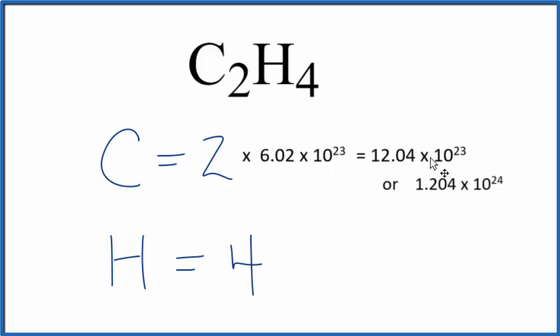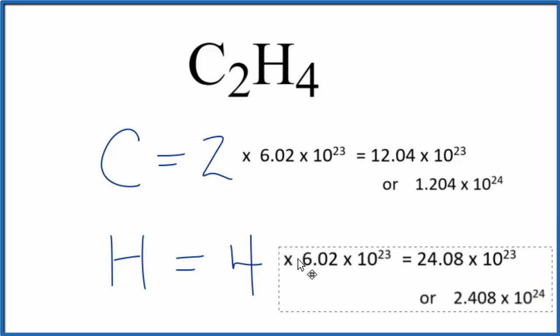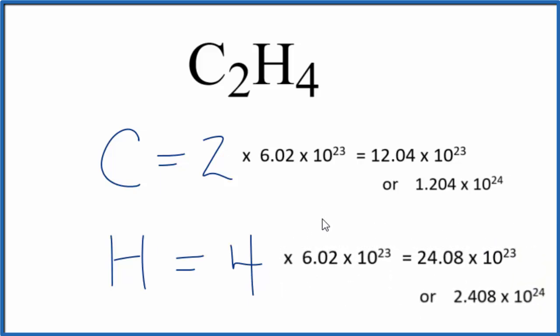So we have 12.04 times 10 to the 23rd carbon atoms in 1 mole of C2H4. Likewise, if you wanted to figure out the number of hydrogen atoms in C2H4 in 1 mole of C2H4, you would multiply 4 times Avogadro's number.